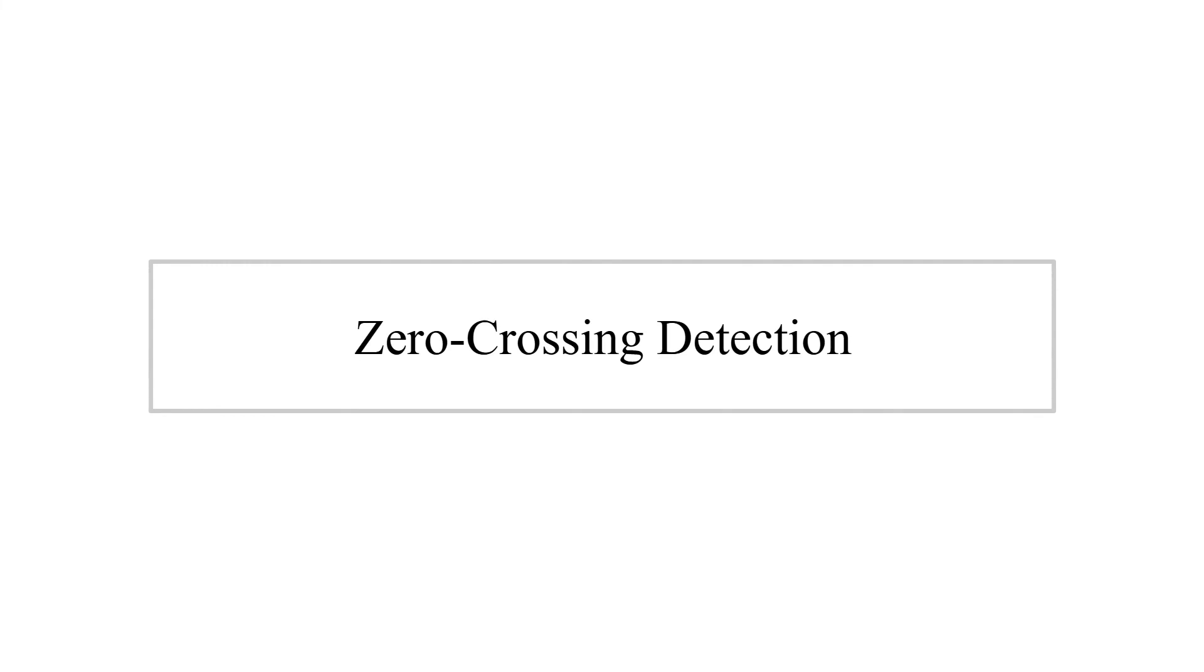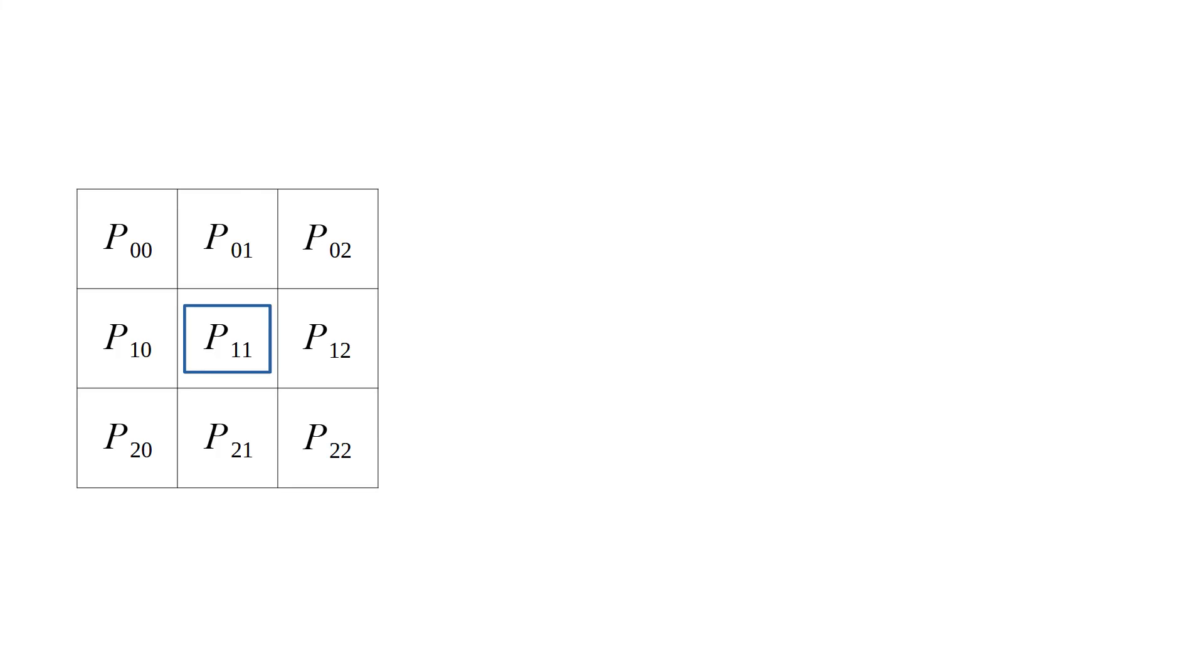Zero crossing detection. It is performed for each pixel separately on a 3x3 neighborhood. On Laplacian result opposite neighbor pairs are inspected.